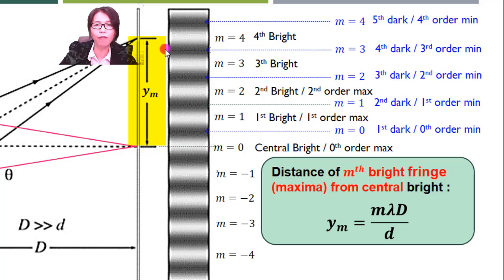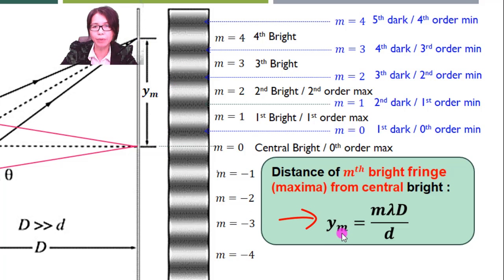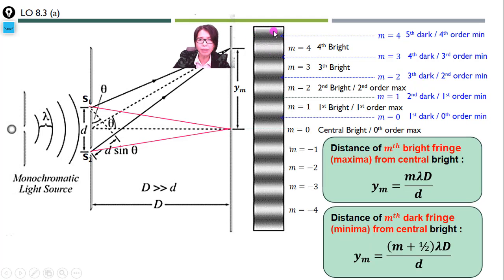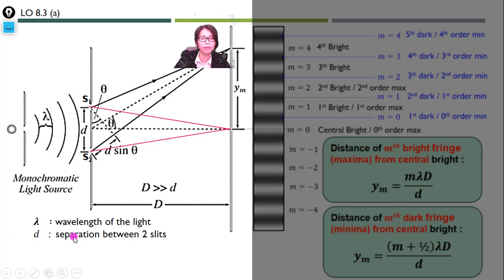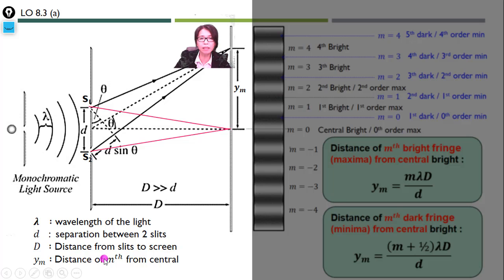We can measure the distance of the M-th bright fringe maxima from the central bright. The distance of the M-th bright fringe from the central bright is given by Y subscript M equal to M·λ·D over d. We may also calculate the distance of the M-th dark fringe from the central bright, which is given by (M + ½)·λ·D over d. Here, λ is the wavelength of the light, d is the separation between the two slits, and capital D is the distance from the slit to the screen where the interference pattern forms. Y subscript M is the distance of the M-th fringe from the central bright.